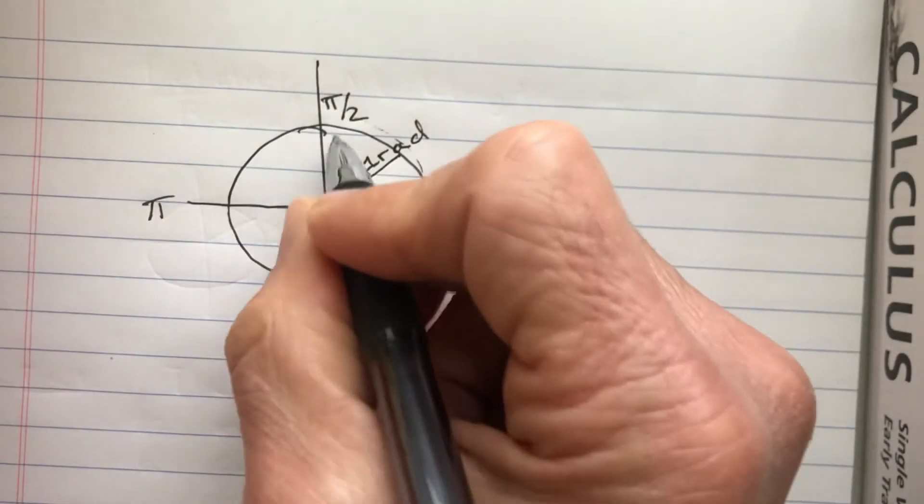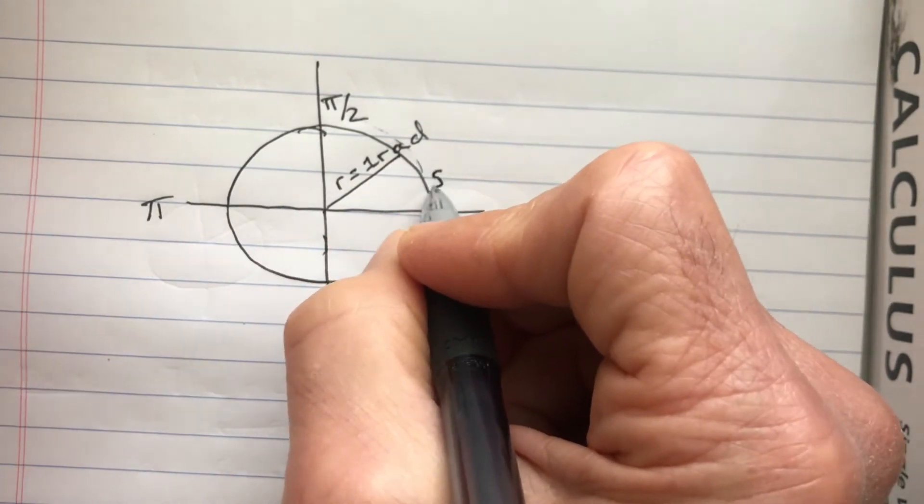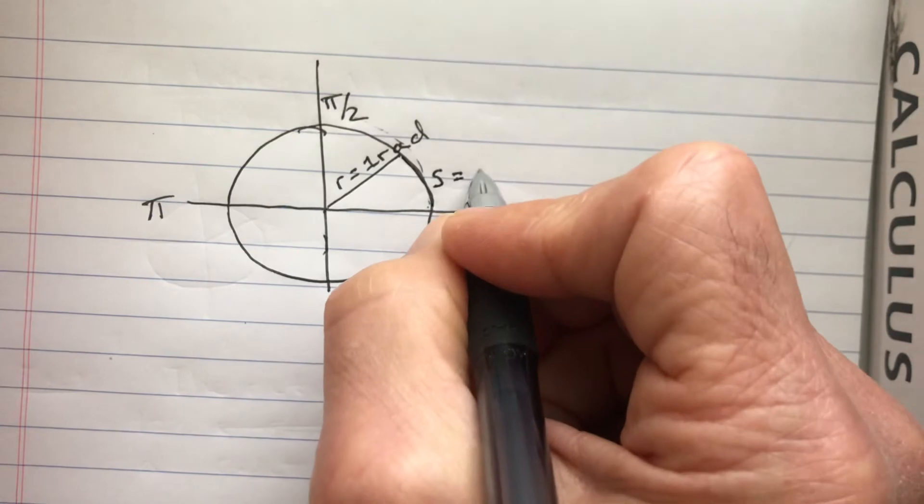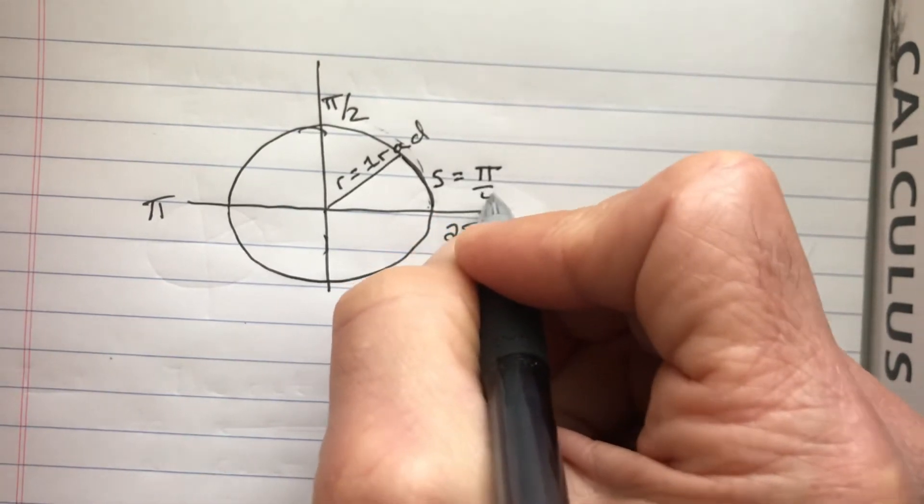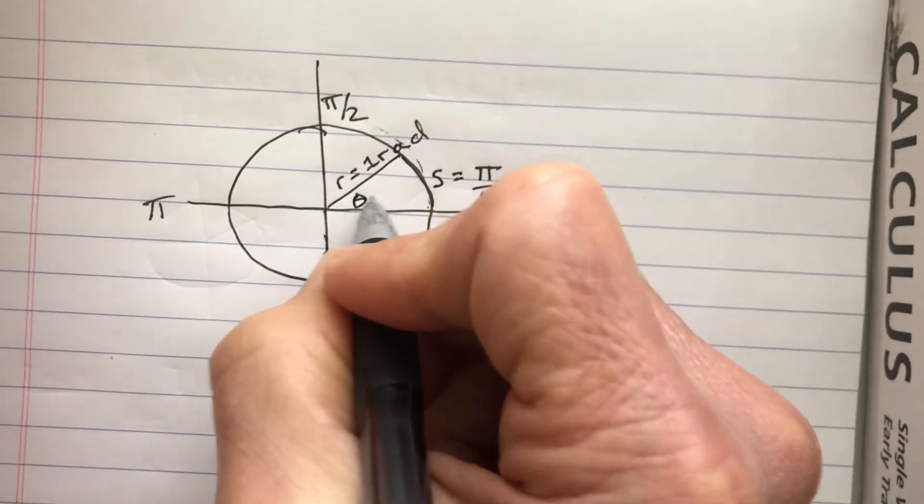Half of that again, let me just say half of this is pi over 2. So S, the actual length here is half of that, which is pi over 4 radians. And we say that theta is equal to pi over 4.